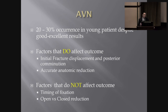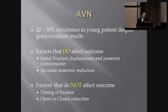Factors that do affect the outcome include fracture pattern, initial displacement, and posterior comminution along the cortex where bone is strongest — this typically occurs in high-energy mechanisms. One factor you can try to control is achieving accurate anatomic reduction; if you can get it as well aligned as possible, the likelihood of AVN is lower. Factors that do not affect outcome include timing — you don't need to operate in the middle of the night when you're not at your best. It is better to wait within reason until the team and OR conditions are ideal.